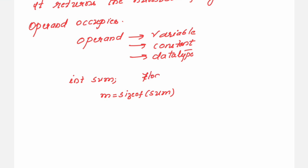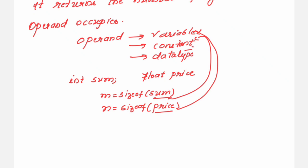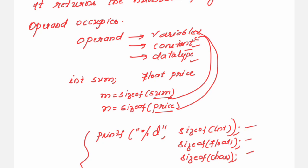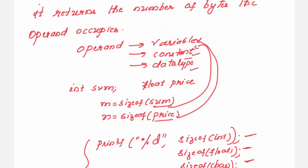Suppose you declare float price — you can assign sizeof(price) to find how many bytes that variable occupies. You can also write printf("%d", sizeof(int)) to know the size of the int data type. Similarly you can check sizeof(float), sizeof(char), and so on. The sizeof operator returns the number of bytes a particular operand occupies.